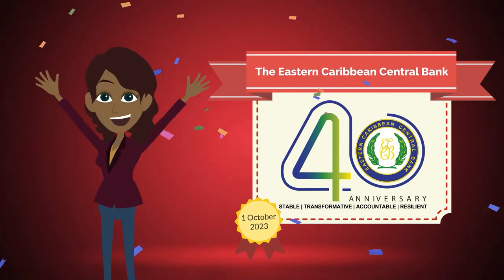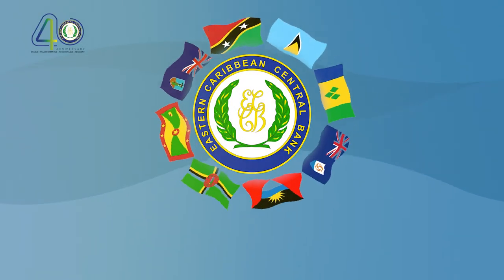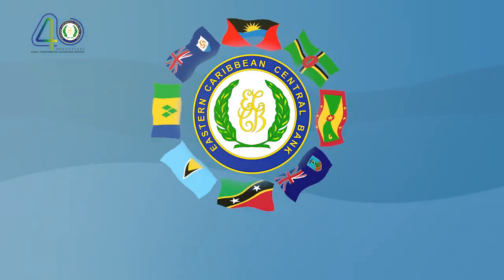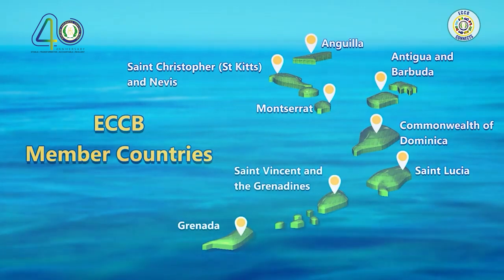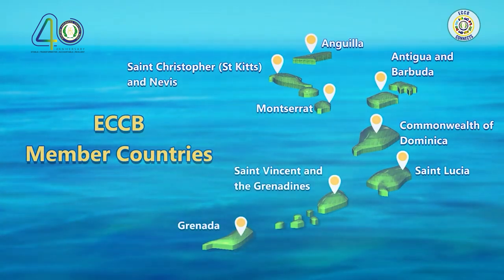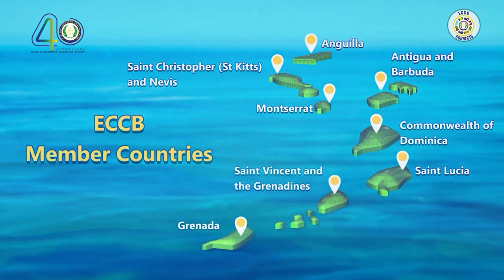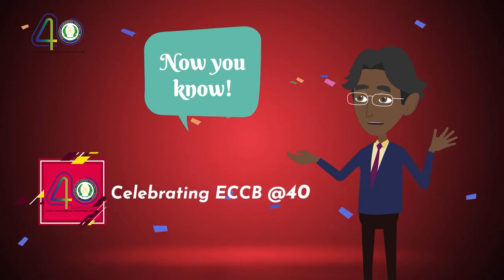Celebrating ECCB at 40. Did you know that there are eight member states of the Eastern Caribbean Currency Union, ECCU? They are: Anguilla, Antigua and Barbuda, Dominica, Grenada, Montserrat, St. Kitts and Nevis, St. Lucia, and St. Vincent and the Grenadines. Now you know — celebrating ECCB at 40.